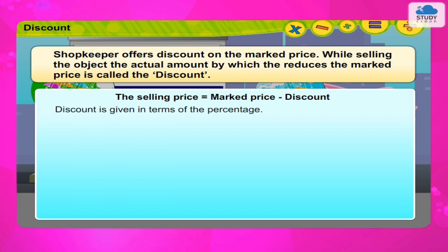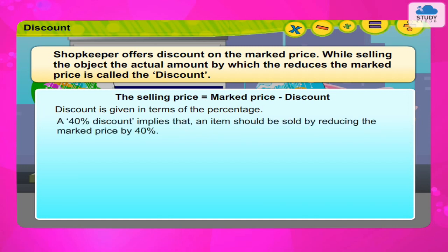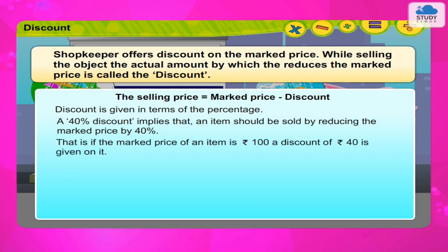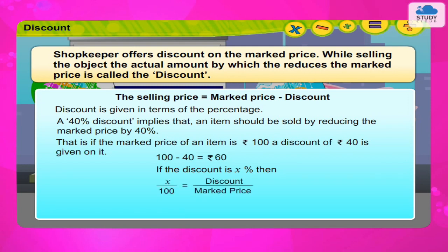Generally, discount is given in terms of percentage. A 40% discount implies that an item should be sold by reducing the marked price by 40%. That is, if the marked price of an item is Rs. 100, a discount of Rs. 40 is given on it. Hence, the selling price will be 100 minus 40 = Rs. 60. In such a transaction, if the discount is X%, then X upon 100 = discount upon marked price. Therefore, discount = marked price × X upon 100.